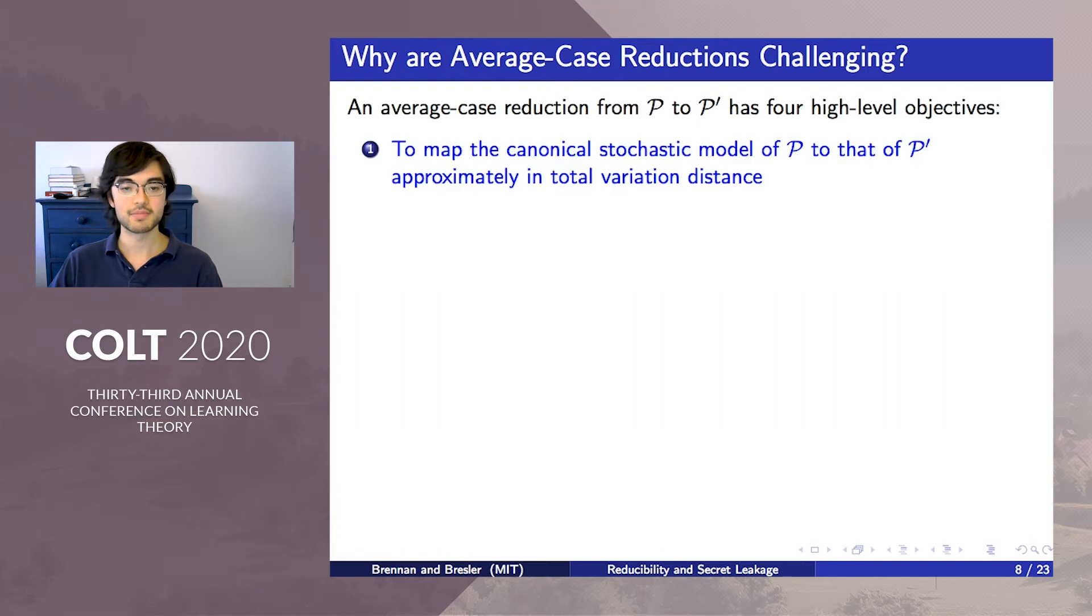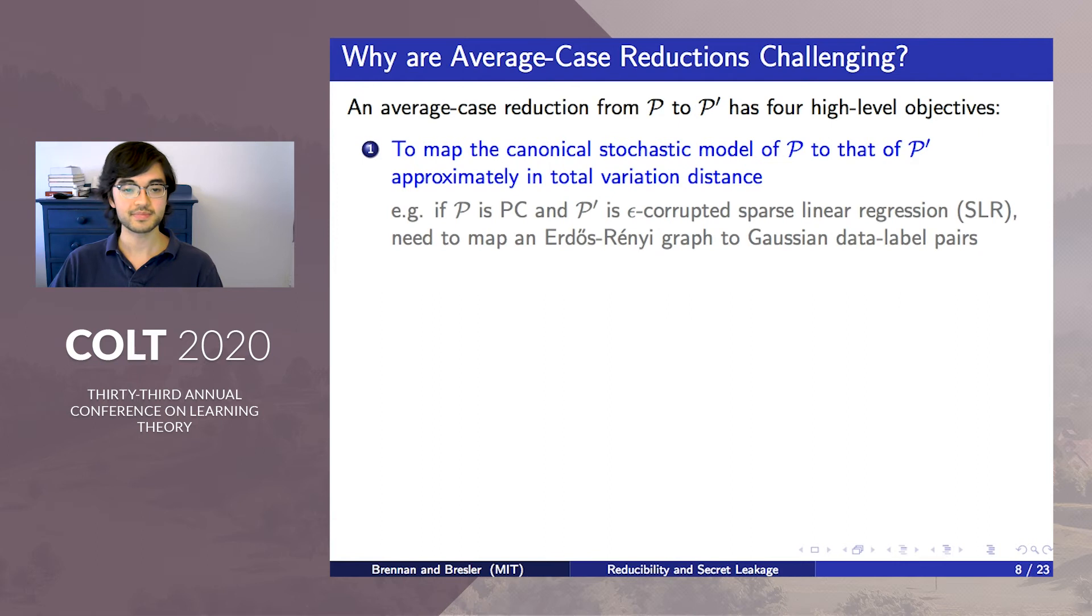First, the reduction must map the natural stochastic model of P to that of P' approximately in total variation. For example, consider a hypothetical reduction from planted clique to robust sparse linear regression. In this case, this constraint corresponds to mapping an Erdős-Rényi graph to the Gaussianly distributed data-label pairs found in robust SLR.